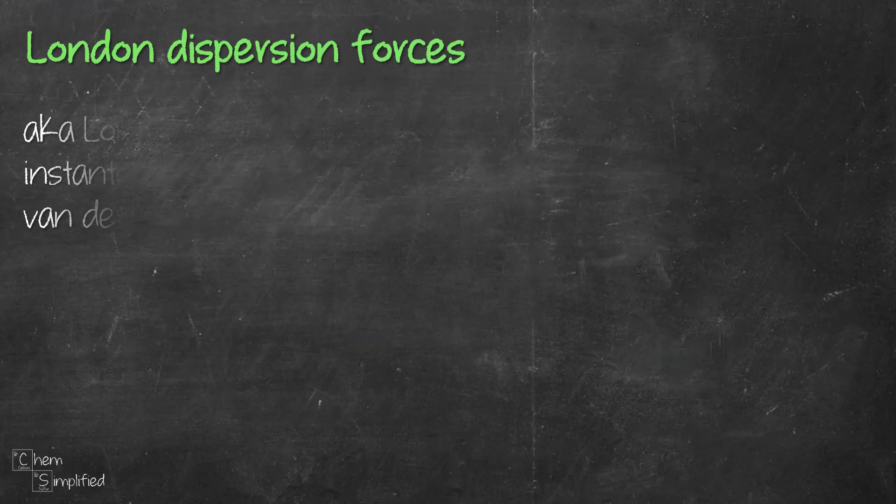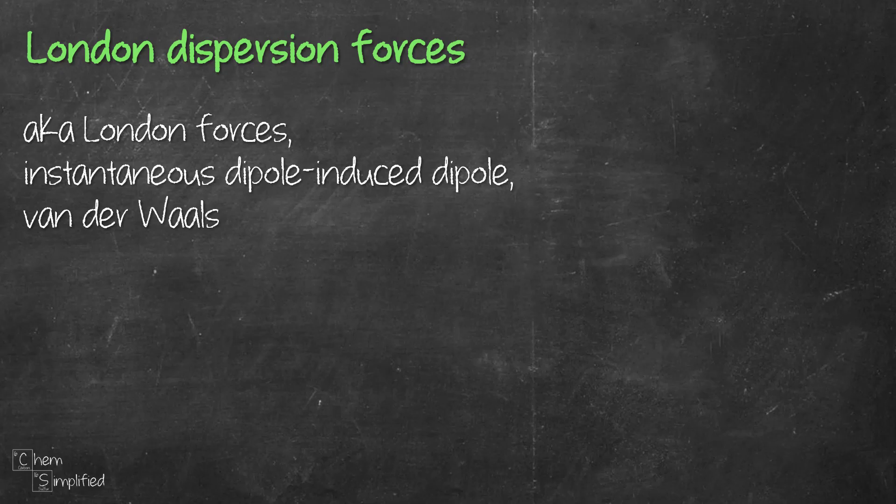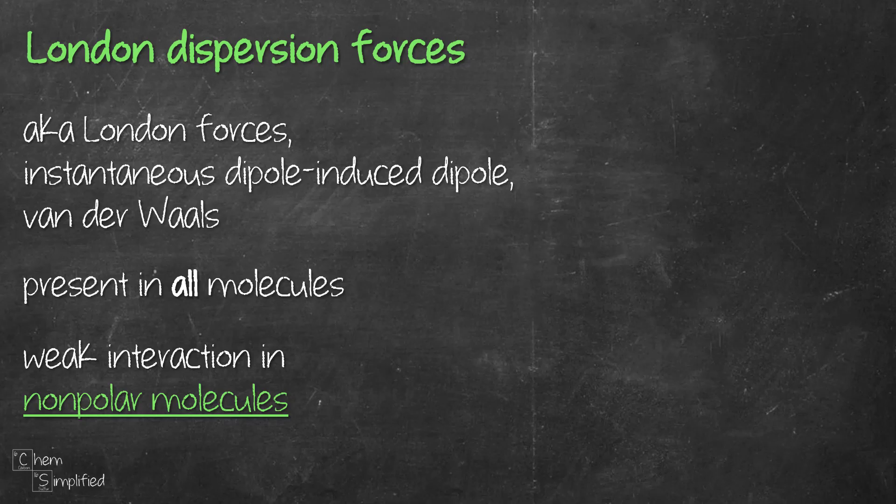We'll start off with the weakest of them all, which is London dispersion forces. London dispersion forces also go by a lot of different names. I often call it London forces just to be short. It's also known as instantaneous dipole induced dipole, which is kind of long, or sometimes it's also known as van der Waals. It's basically present in all atoms and molecules. However, for non-polar molecules, this is the only type of force that is present between them. Therefore you'll often hear London forces being associated with non-polar molecules, since the other type of molecules have other intermolecular forces which are stronger.